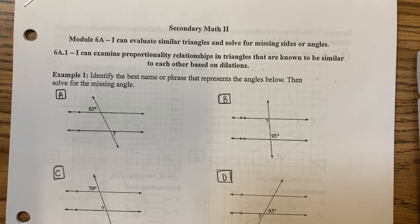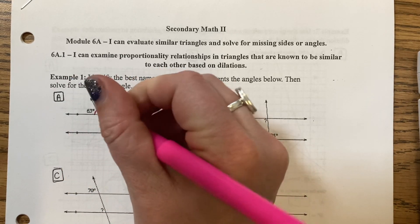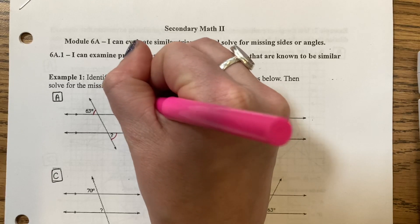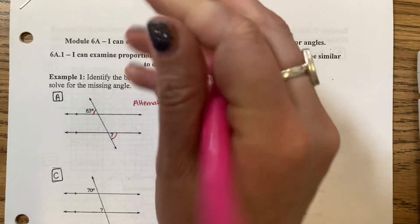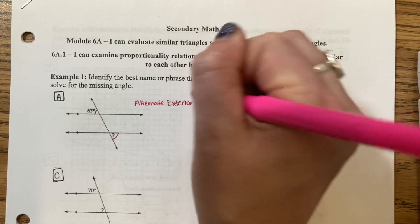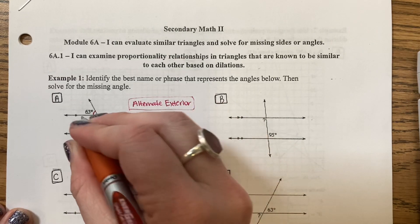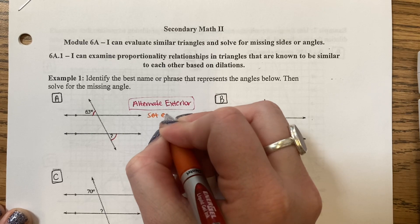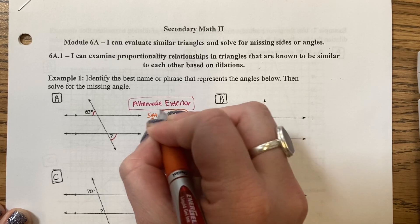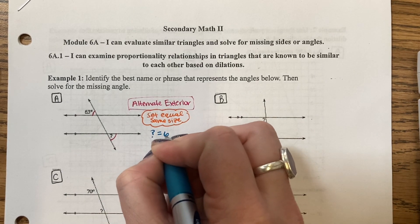The first question, A. I have angle 63 and this angle here. They are alternating sides of the transversal, alternate, and they are exterior because they are outside of the parallel lines. And then we'll solve for them by setting them equal because they are the same size angle. So the question mark is equal to 63 degrees.